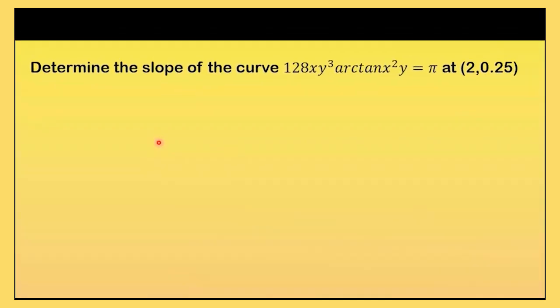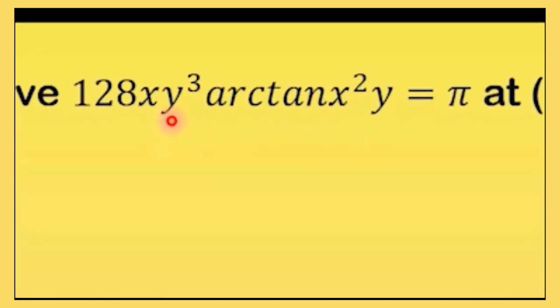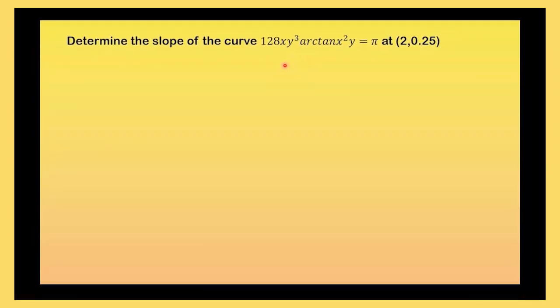For example, you have this problem. Determine the slope of the curve 128xy cubed arctan of x squared y equals pi at 0.2 and 0.25. Can I express this y in terms of x? If you can, but expressing it y in terms of x is a very difficult task because there is y inside the arctan function and there is y outside of it. It's not just a simple algebraic function. So therefore, if the case is like that, you cannot directly put it in the calculator.